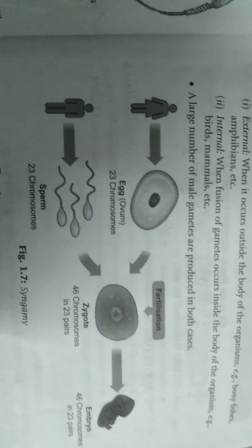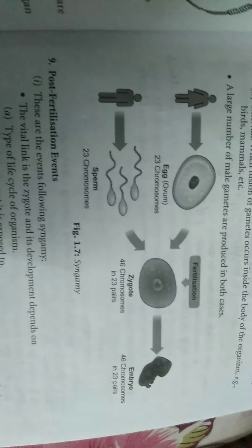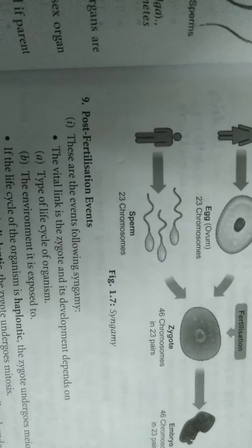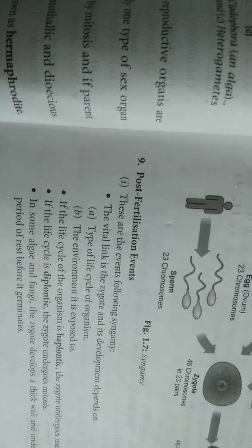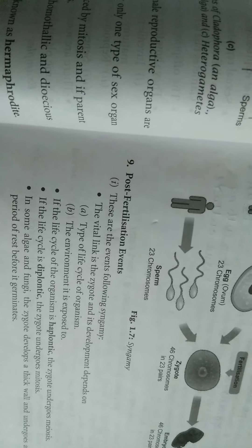Post-fertilization events occur after zygote formation. Zygote always divides and ensures the continuity of the species generation after generation. Post-fertilization events are divided into embryogenesis, during which mitosis occurs leading to the growth of the embryo.